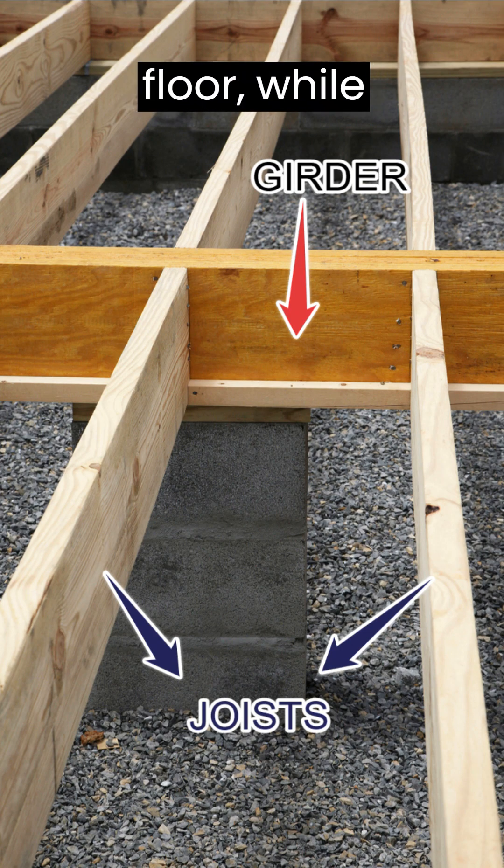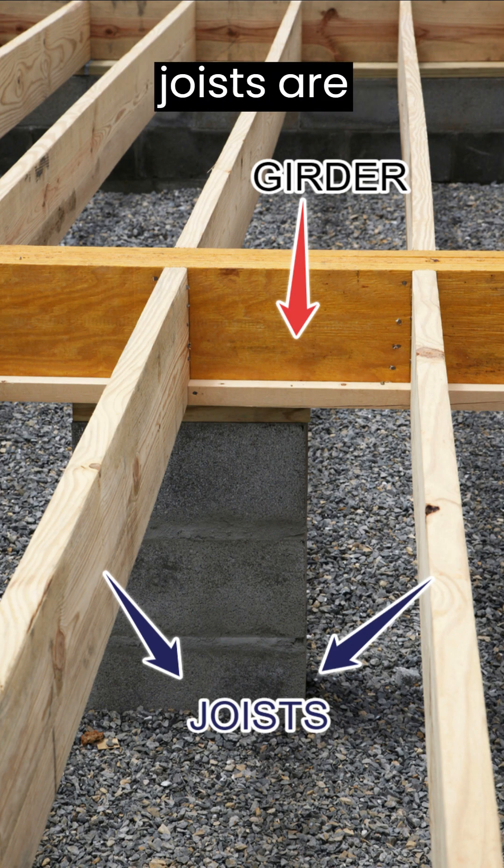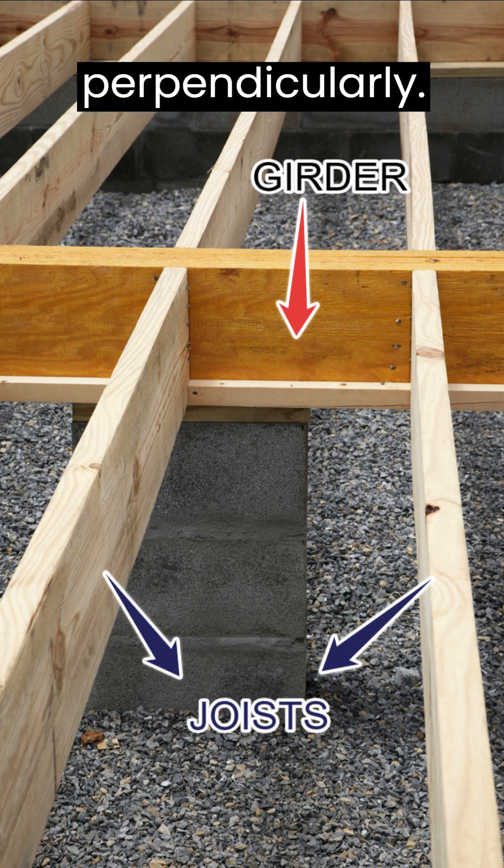Joists support the floor, while a girder is a beam that joists are attached to perpendicularly.